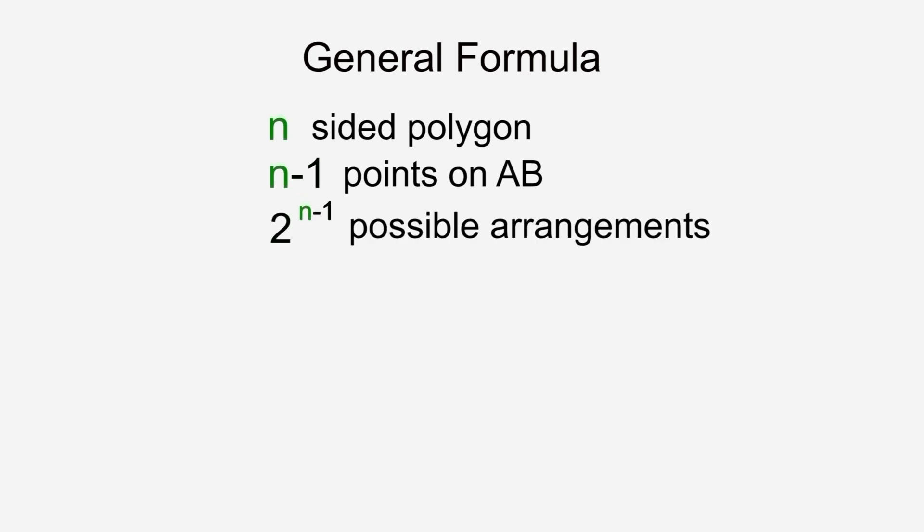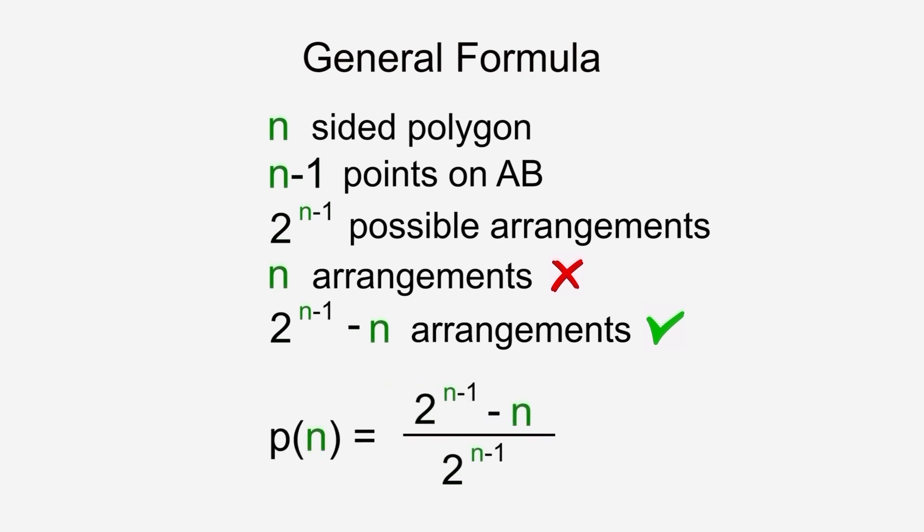Now let's state the general formula. For an n-sided polygon, we need n-1 random points on AB. There will be 2 to the power n-1 possible arrangements of those n-1 points in our stacked view. Each is equally likely. n arrangements will not form a polygon. So the probability of forming an n-sided polygon with n-1 random points on AB is 2 to the power n-1 minus n all divided by 2 to the power n-1.